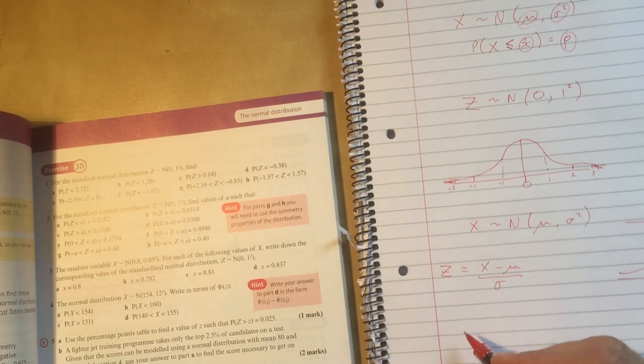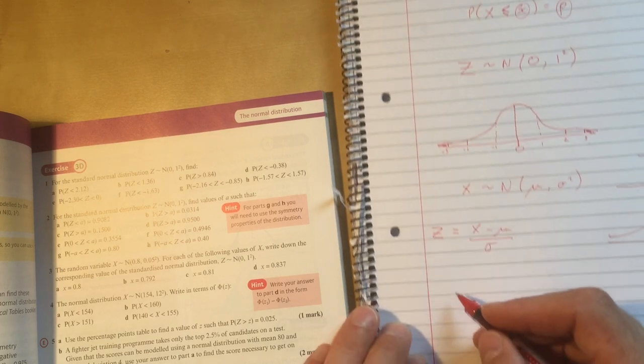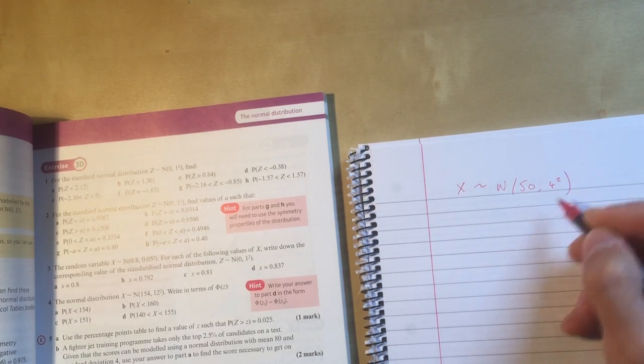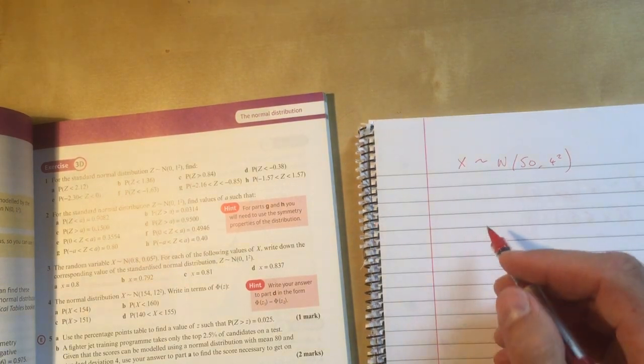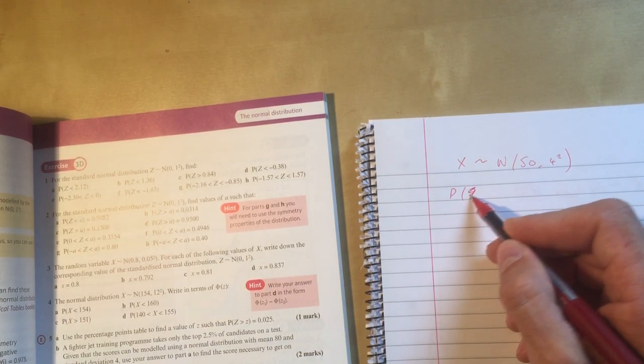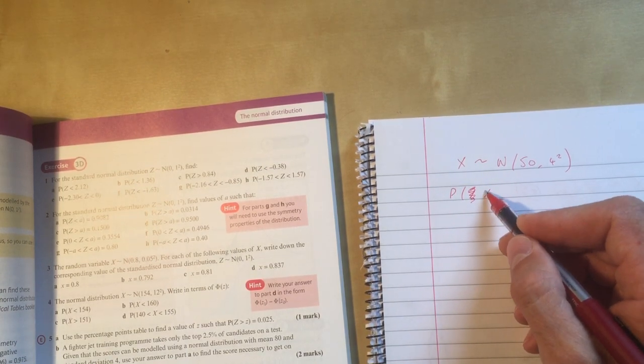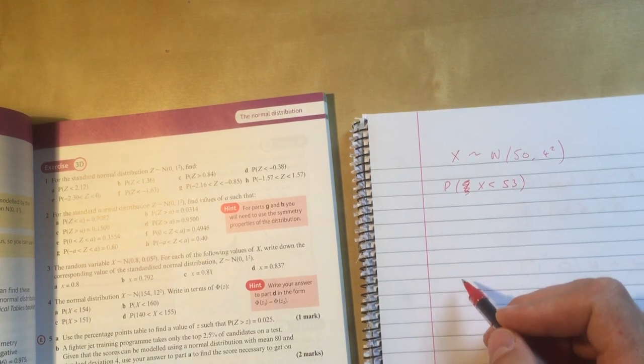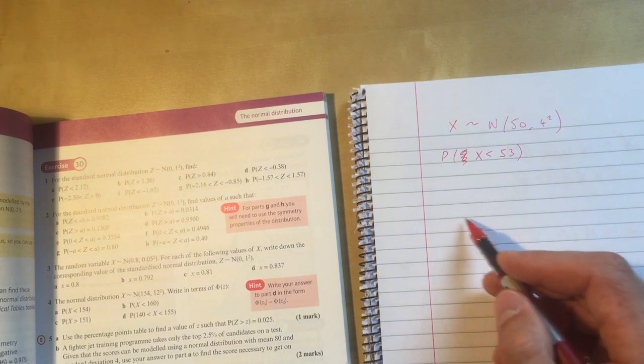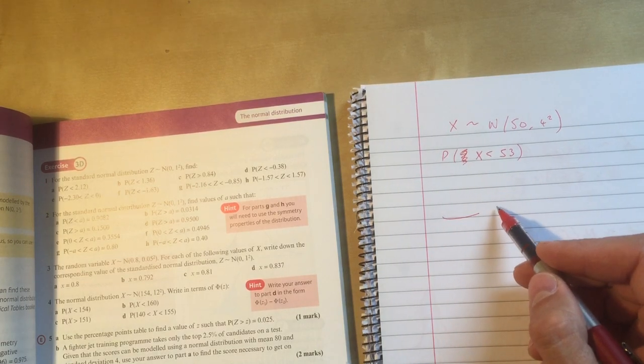If we have, and I'm looking at example 6 here in the textbook if you want to follow it through. Let's have a new piece of paper. So if we've got x is distributed normally with 50, 4 squared, and I'm interested in the probability that x is less than 53.